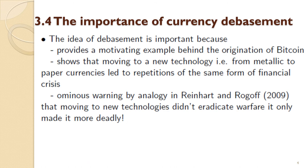Currency debasement provides a motivating example behind the origination of Bitcoin and emphasizes the importance of taking a historical perspective. Moving to a new technology — for example from metallic to paper currencies to make transporting currencies easier — still led to repetition of the same form of financial crisis. Indeed, going from currencies backed by precious metals to today's fiat currencies, you still have the same problem occurring.